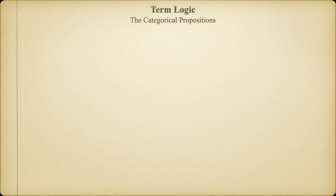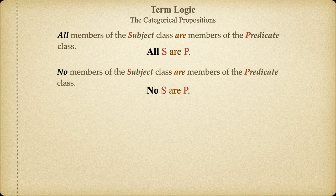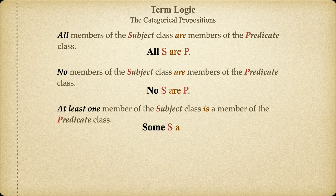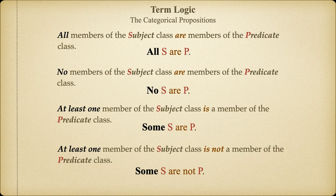Putting all this together, we discover that we actually have four and only four categorical propositions. The universal affirmative asserts that all members of the subject class are members of the predicate class. The universal negative tells us that not one member of the subject class is part of the predicate class. The particular affirmative tells us there's at least one member of the subject class that's a member of the predicate class. And the particular negative tells us that there's at least one member of the subject class that is not a member of the predicate class. These four statements exhaust all of the propositional content we can express regarding two classes of things.